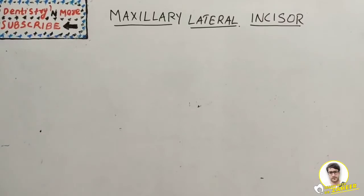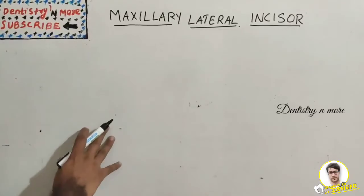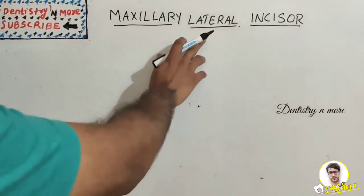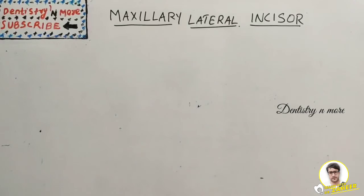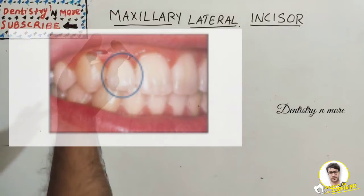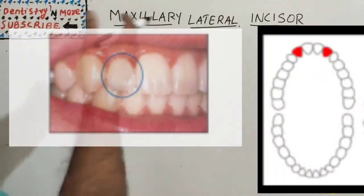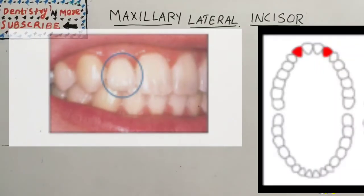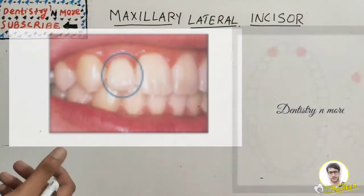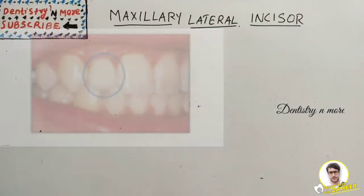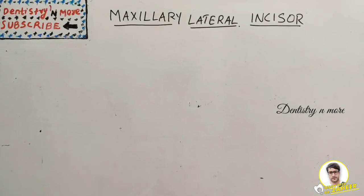Hello everyone, welcome back to another session in Dentistry and More. We are continuing our dental anatomy sessions. Last session was about the maxillary central incisor; now we have the maxillary lateral incisor. There are two in number. The maxillary central incisor is present on the mesial side and the canine is present on the distal side. The basic functions are shearing or cutting food, speech, and support for the lips.